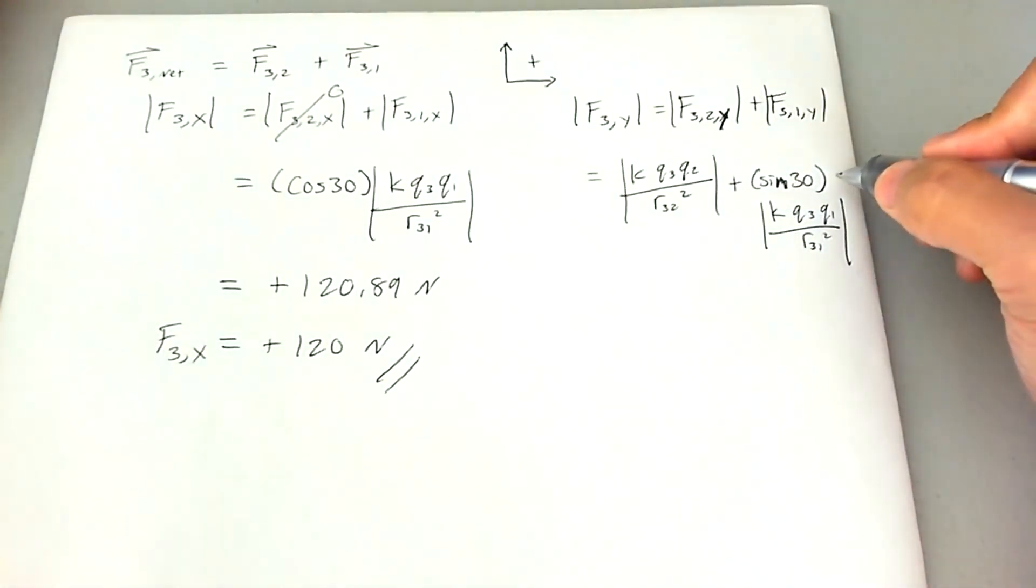Again, we're using sine because we're looking for the leg of the triangle for the force triangle that's opposite of the 30 degrees that's acting on it. So go ahead and reference the original question slide for more information on that.